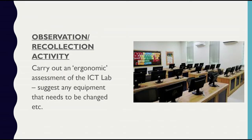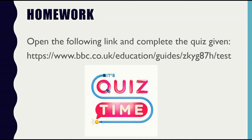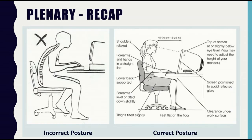As the second task, think about our lab at school and suggest how we can ergonomically make the ICT lab a better and safer place for health and physical safety, and suggest any equipment that needs to be changed. As homework for this chapter, you have a BBC Bitesize quiz that needs to be completed.